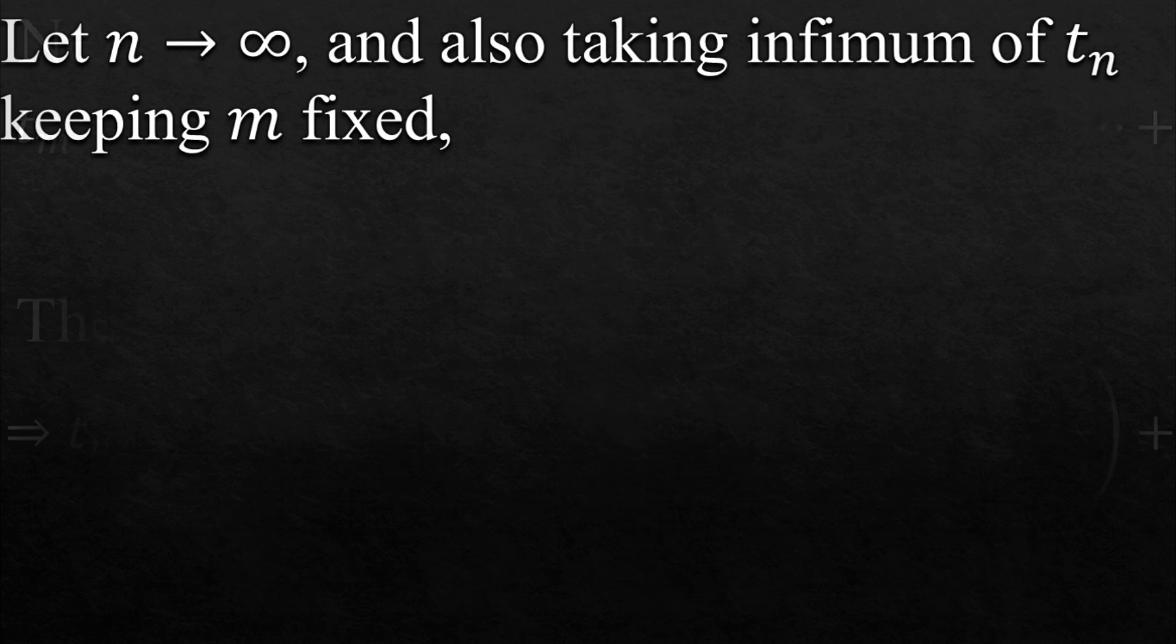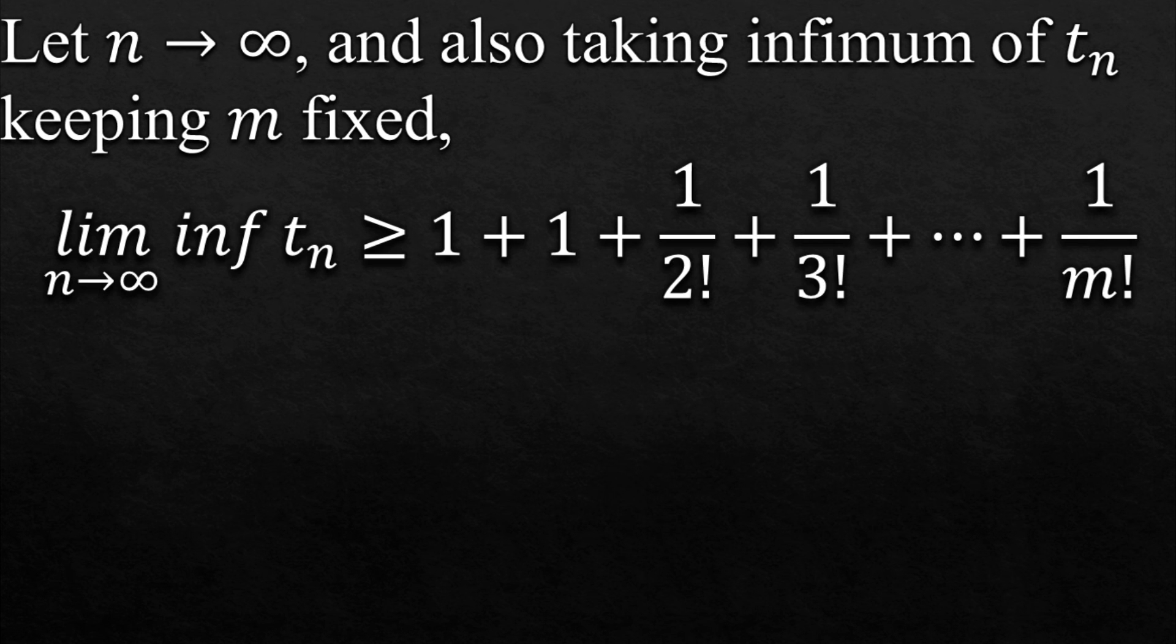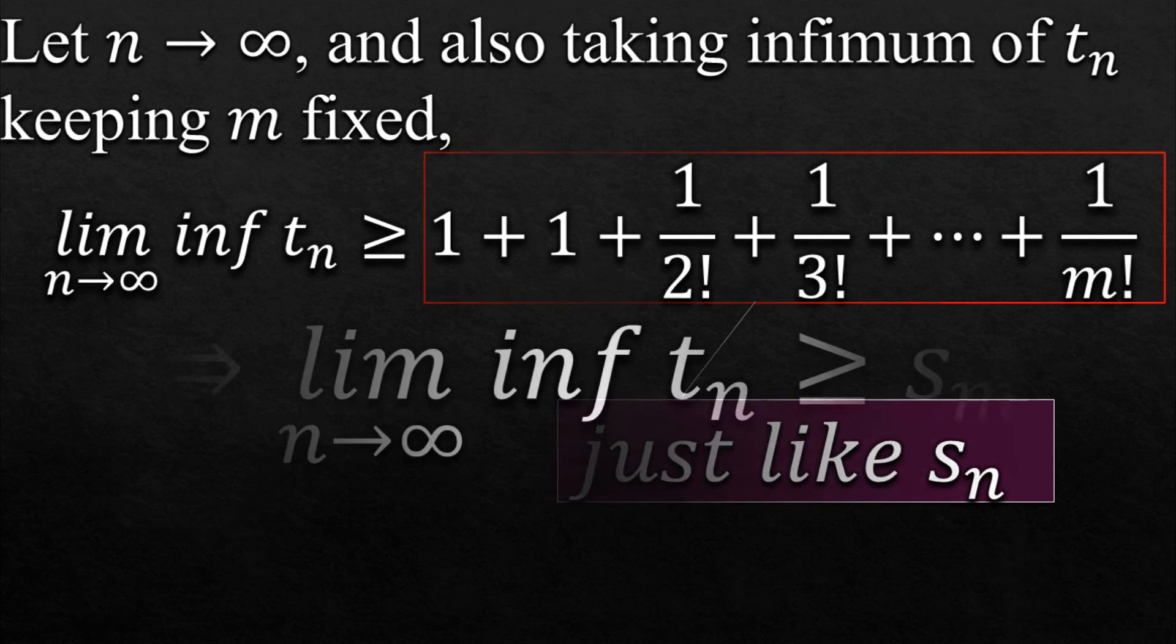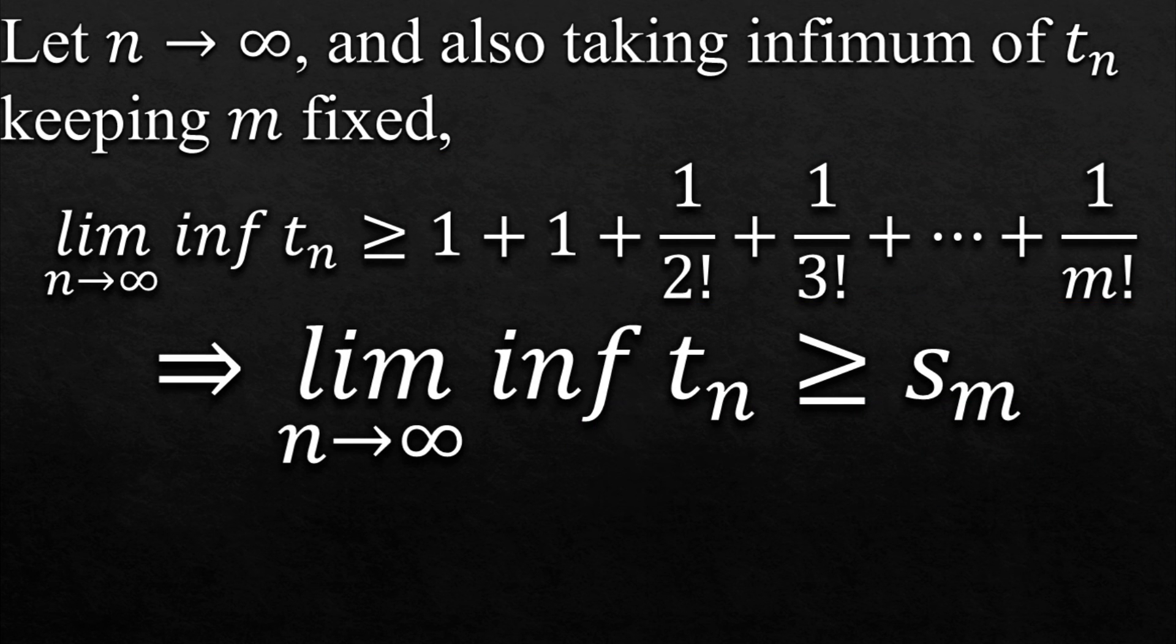Now let n approach infinity and also taking infimum of Tn but keeping m fixed, we got this. Guys, does this part remind you of something? Oh, I got it. It is just like the series Sn, except that it has m instead of n and we know that n is greater than or equal to m. So we can call this series Sm because it is exactly like Sn.